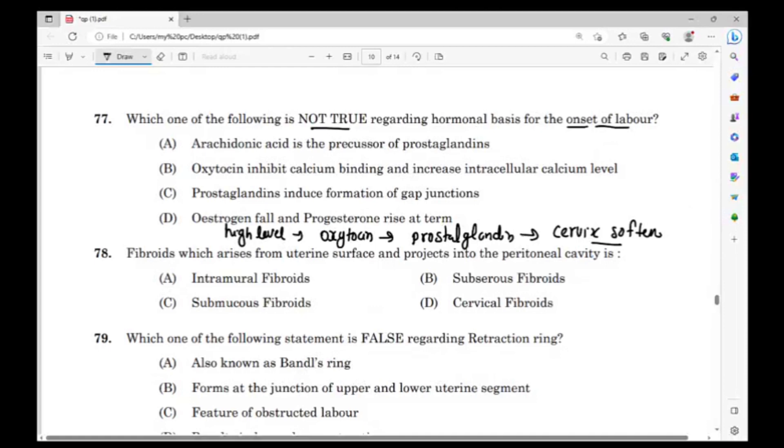High level estrogen leads to oxytocin release, then prostaglandin release and the cervix softens. Also helps development of the baby organs. Estrogen function is written. Oxytocin causes myometrial contraction, cervix dilation, cervical softening and cervical dilation - 10 centimeter dilation, softening of the cervix.